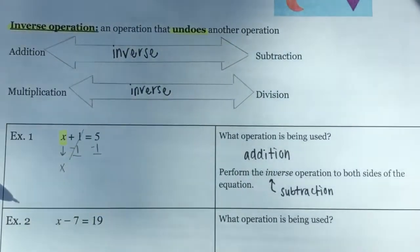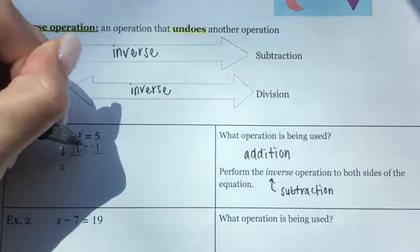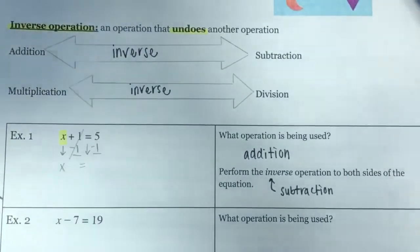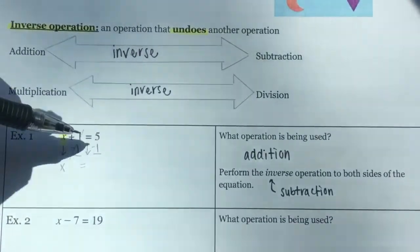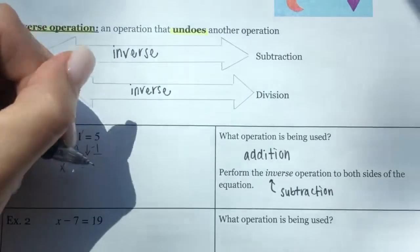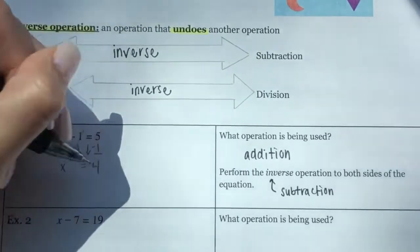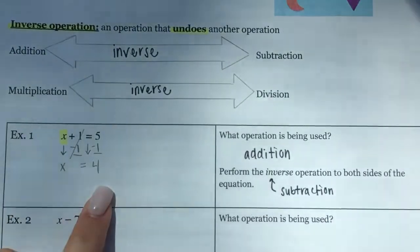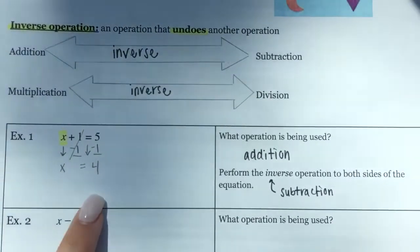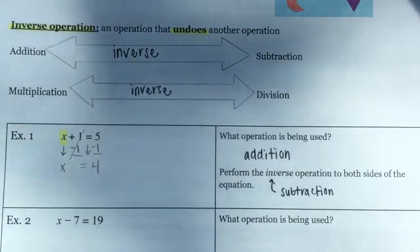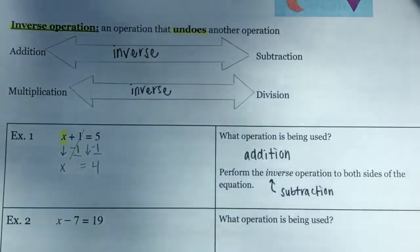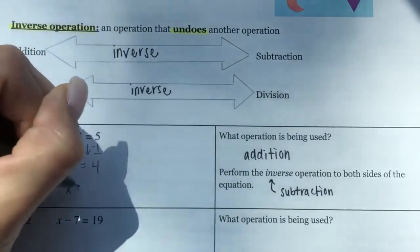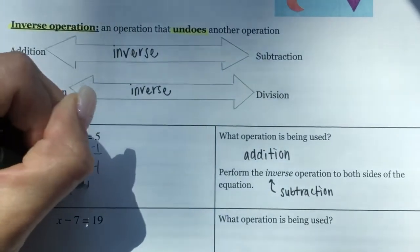Then 5 minus 1 is 4. Once you get to X equals just one number, you're done and you've solved the equation. Our solution is X = 4.